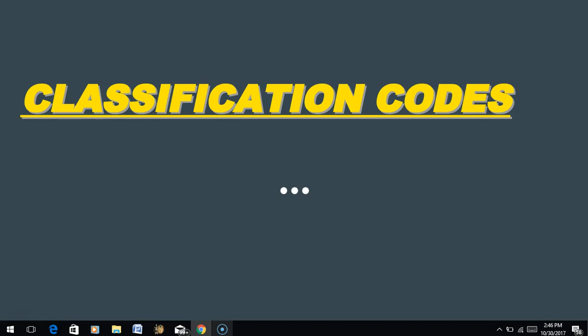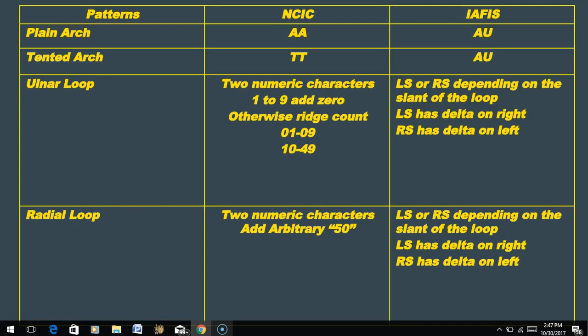Now let's talk about what we write in those 20 blocks - the classification codes for NCIC versus AFIS. For arches and loops: if the right thumb is a plain arch and we're doing NCIC, we put two capital A's in the first two blocks. If it's a tented arch in NCIC, we put two capital T's. So NCIC differentiates between plain arches and tented arches. But with AFIS, there's no differentiation - whether it's a plain arch or a tented arch, we simply put A and U. There's no way to differentiate between arch types using AFIS.